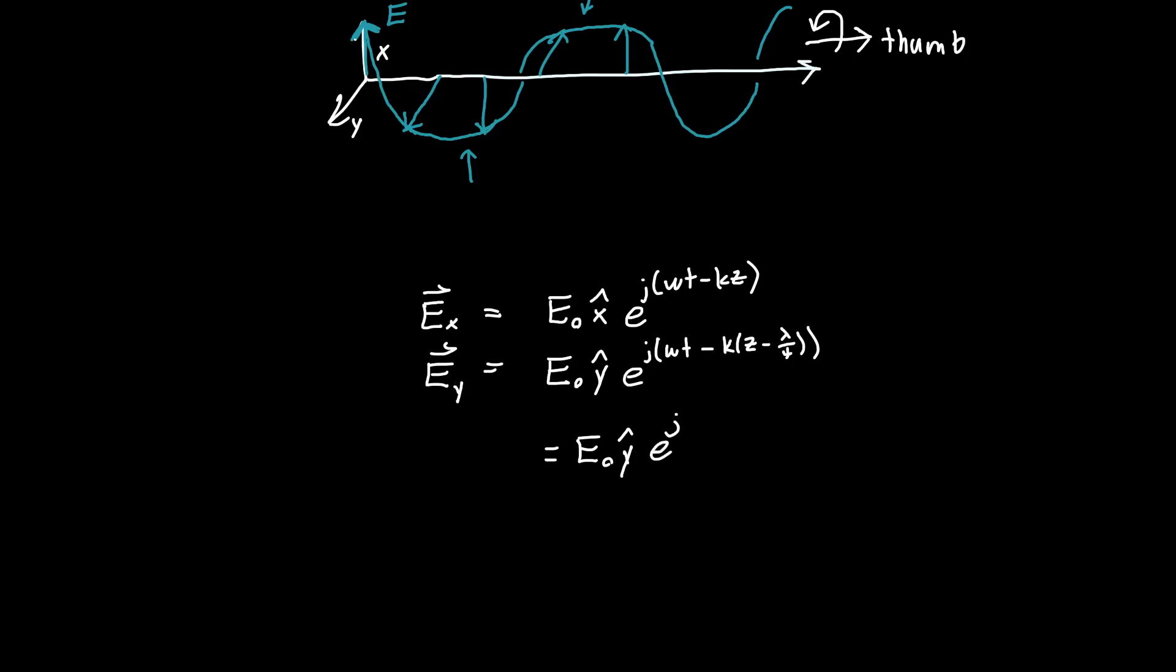And we can rewrite that. So E_0 y e^(j omega t minus kz) plus, so what's k times lambda over four? Well, k is 2 pi over lambda times lambda over four. Lambdas cancel and we get pi over two. So plus pi over two.